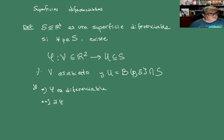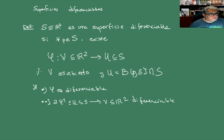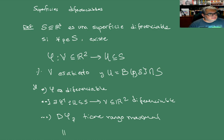También se requiere que exista φ inversa, que va del abierto U al abierto V, y es diferenciable. Y la diferencial de φ en un punto tiene rango maximal. La diferencial de φ en p es una transformación que va de R² en R³, entonces lo que le vamos a pedir es que tenga rango 2.